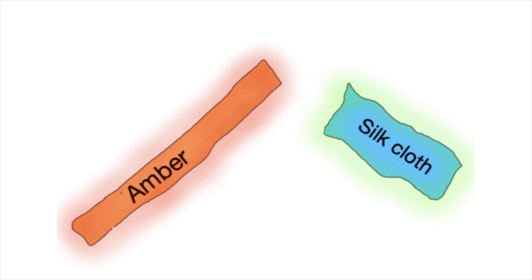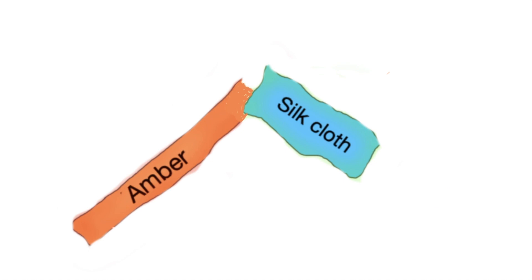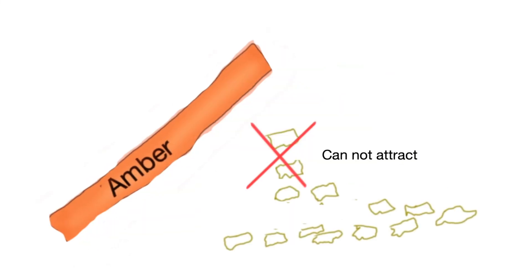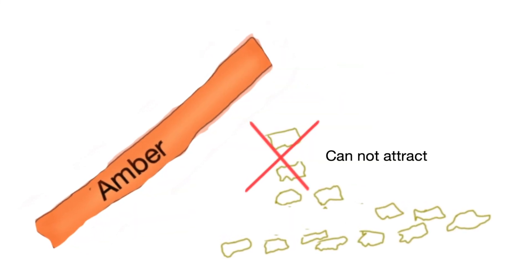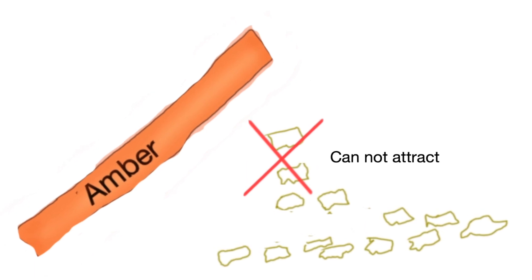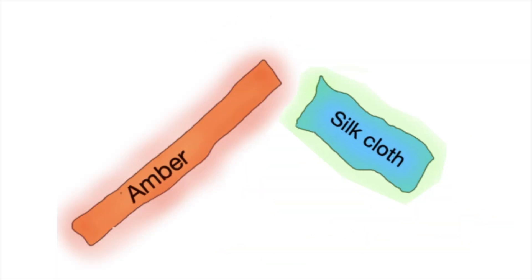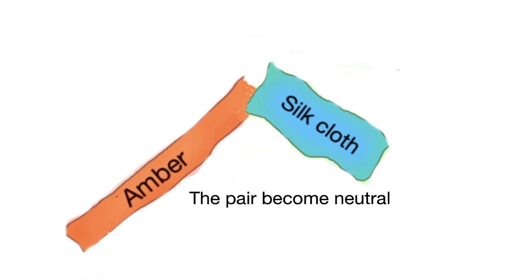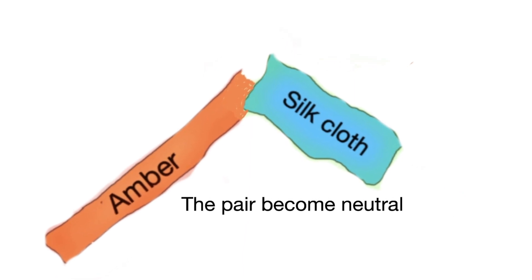The more important thing is that when the charge pair come into contact, they lose their ability to attract the piece of paper as they previously did. So it can be concluded that the two kinds of charges can neutralize each other.